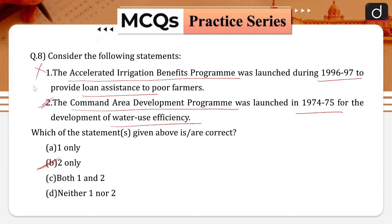The Accelerated Irrigation Benefits Program was launched during 1996-97 to provide financial assistance to states to expedite completion of ongoing major and medium irrigation — including extensive renovation and modernization of irrigation projects — and surface minor irrigation schemes as well as lift irrigation schemes. Therefore, statement one is incorrect — it provides financial assistance to states, not loan assistance to poor farmers.